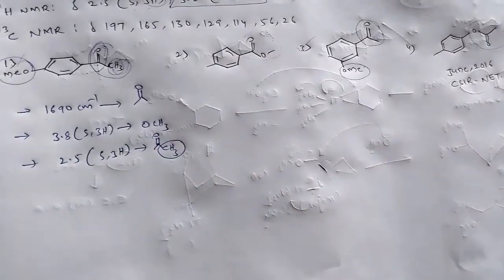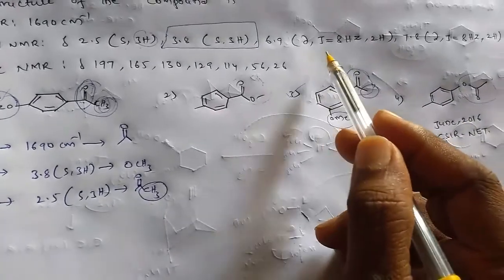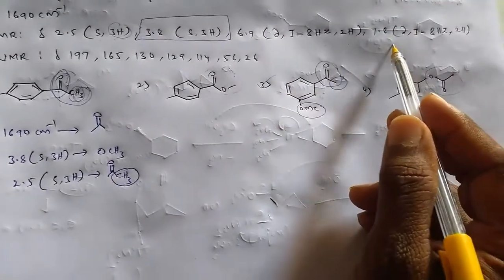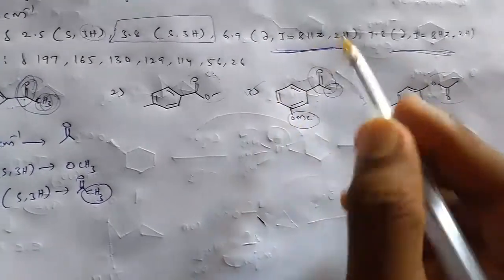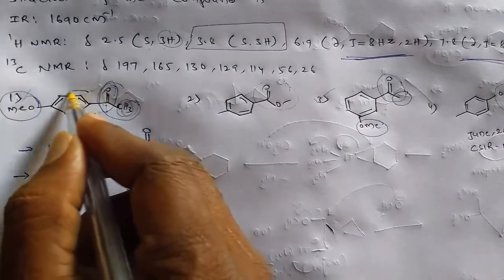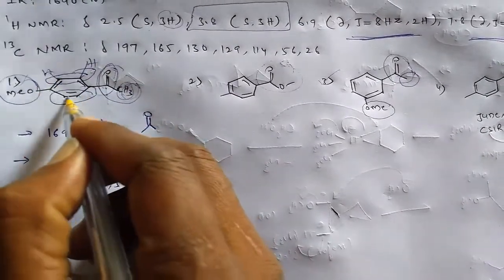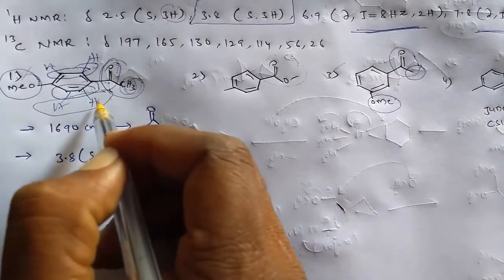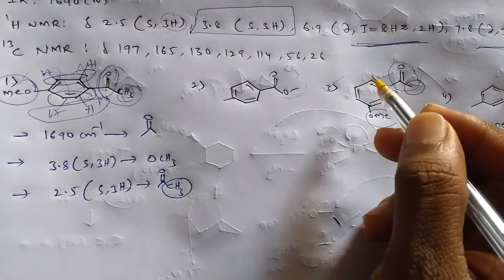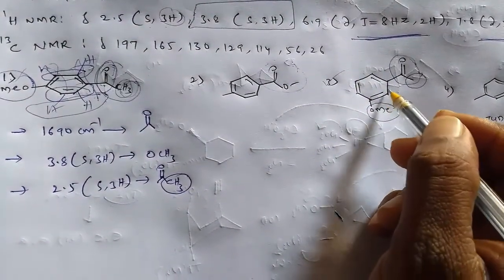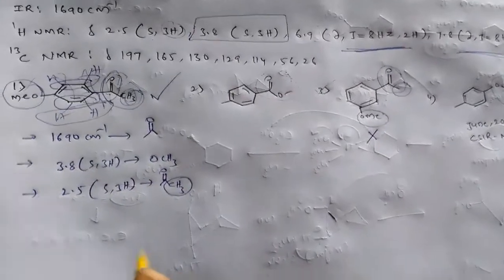Next, δ 6.9 doublet J = 8 Hz (2H) and δ 7.8 doublet J = 8 Hz (2H) — the aromatic ring shows two sets of doublets. In the first option we have a para-substituted ring with two sets of chemically equivalent protons giving doublet-doublet patterns. In the third option only one doublet-doublet pattern is present, so the third option is eliminated. Only the first option remains.